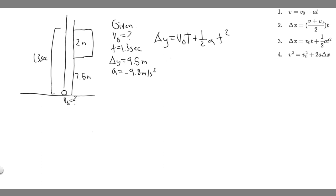So the change in Y is 9.5, which equals V sub 0 times T, which is 1.3, plus 1 half times A, which we said was minus 9.8, times T squared, so just 1.3 squared.